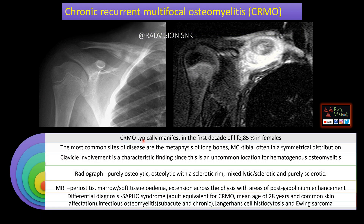CRMO typically presents in the first decade, most commonly in females. Most common sites are long bones and tibia, and it can be symmetrical. Clavicle involvement is a characteristic finding because clavicle involvement is uncommon in hematogenous osteomyelitis. Differential diagnosis includes SAPHO syndrome, which is the adult equivalent of CRMO, presenting with skin and other manifestations. Other differentials include Langerhans cell histiocytosis and Ewing sarcoma.